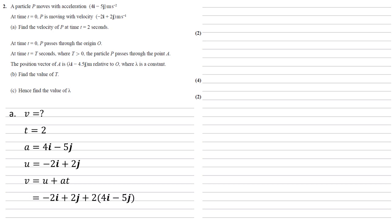So putting our values into that, we get that v is equal to minus 2i plus 2j, plus two lots of 4i minus 5j, which comes to 6i minus 8j.